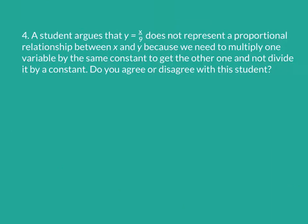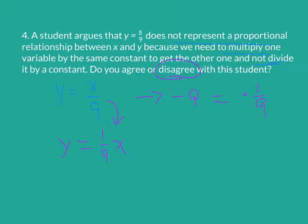In our next problem, a student argues that y equals x over 9 does not represent a proportional relationship, because we need to multiply one variable by the same constant to get the other one, not divide. However, you should know that dividing by 9 is the same thing as multiplying by 1 ninth. We can therefore rewrite this as y equals 1 ninth x, because those are the same. So I disagree with the student, and this proves it — those two expressions are equivalent.